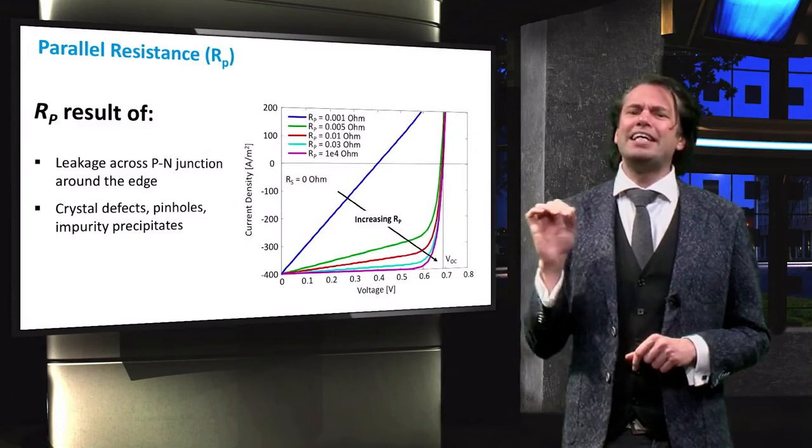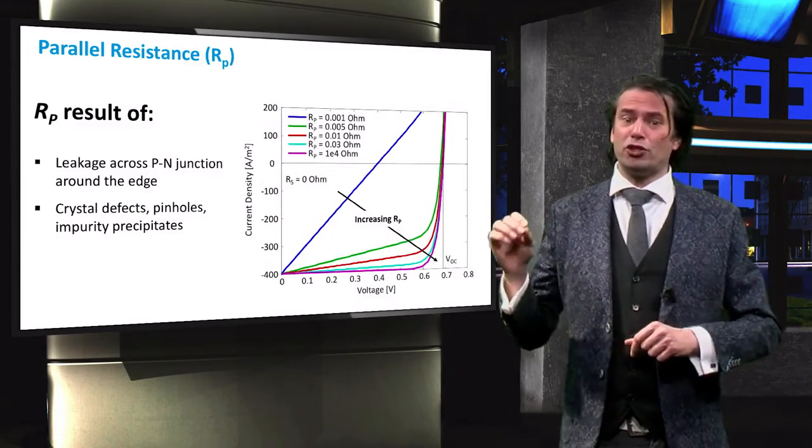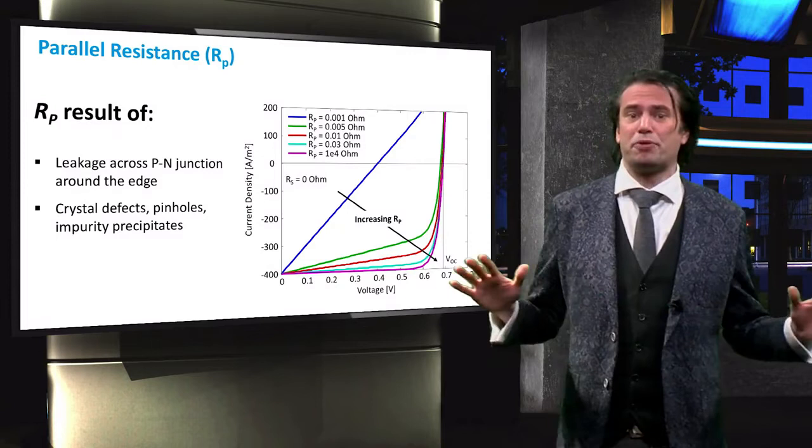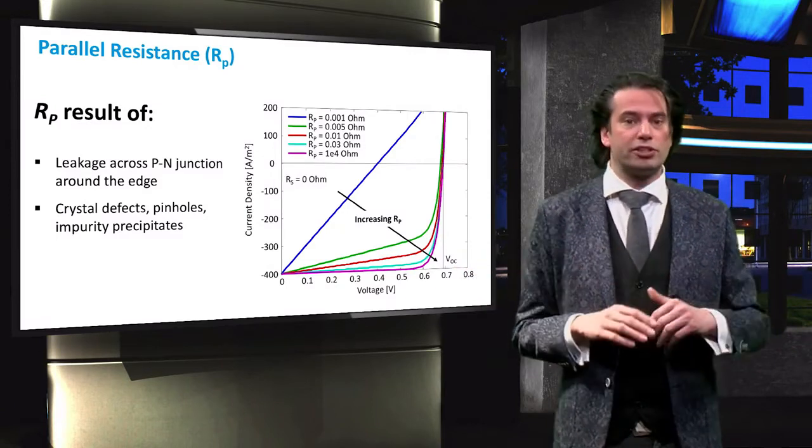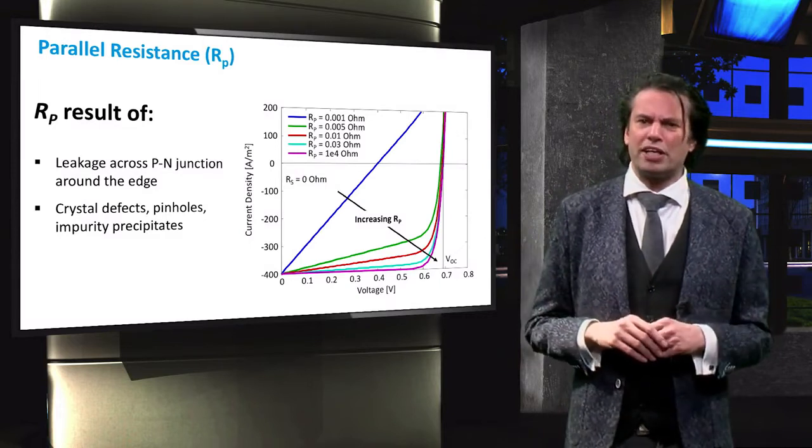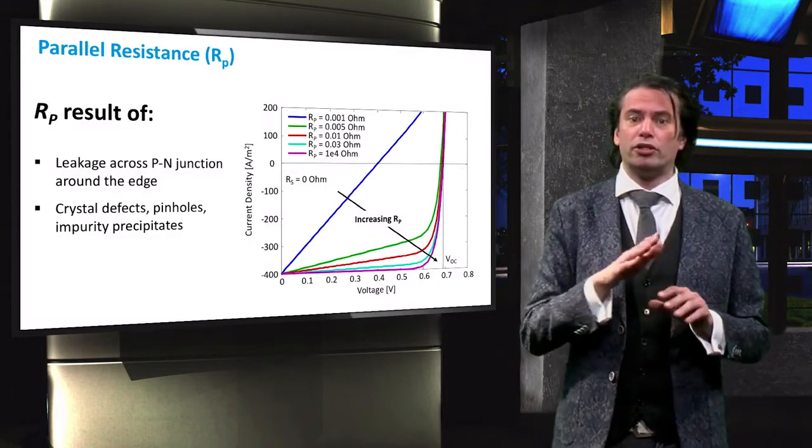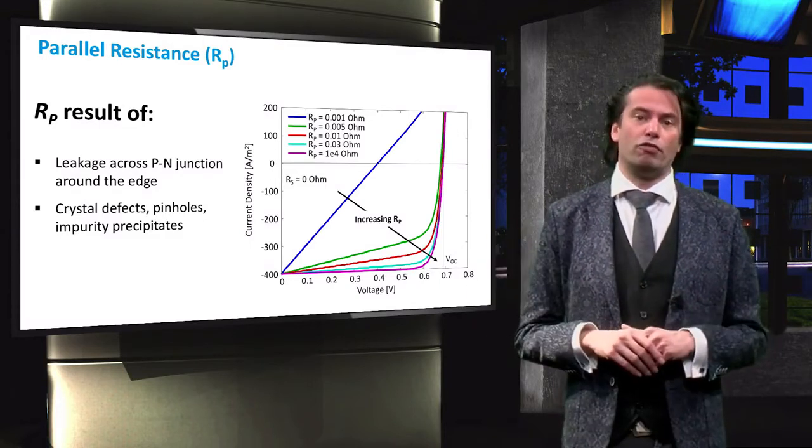You can see here that if we have a shunt resistance of 0, our solar cell hardly produces any power at all. As we increase our shunt resistance by orders of magnitude, we can see the shape of a curve return to that of an ideal diode.